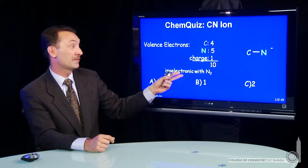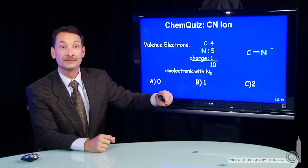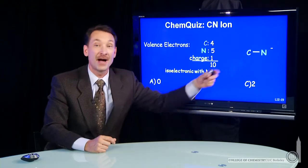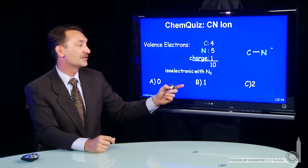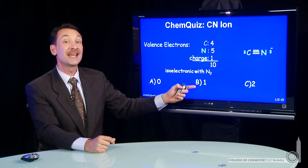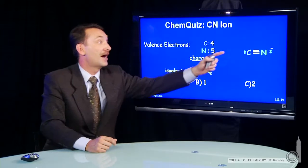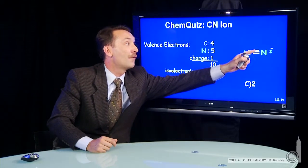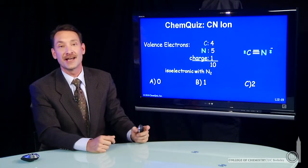That's actually the same number of electrons as the N2 molecule. So CN minus requires two more bonds to get 10 total electrons. I have 2, 4, 6, 8, 10 electrons in the cyanide ion.